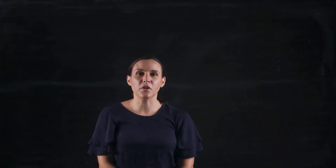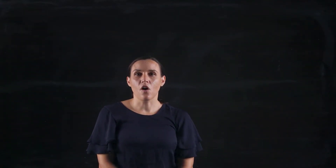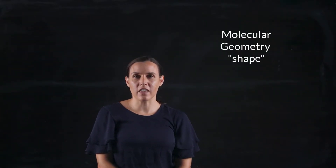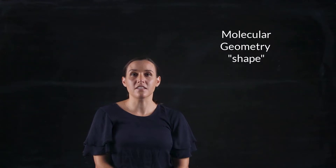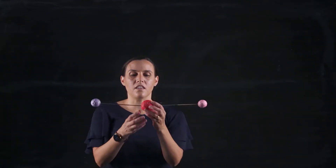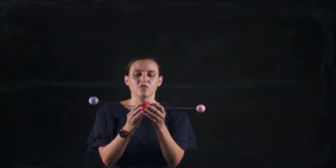Welcome to today's video. I'm going to go through the shapes of molecules, looking at the central atom and the arrangement of atoms and electron pairs around the central atom, then applying the corresponding shape to it. Let's start off with a central atom.